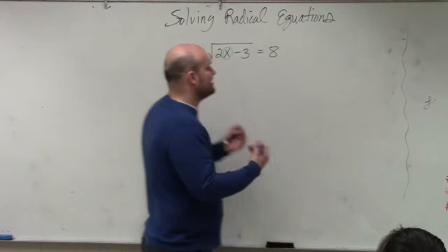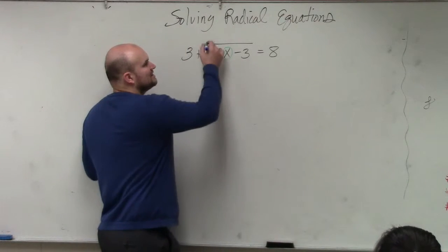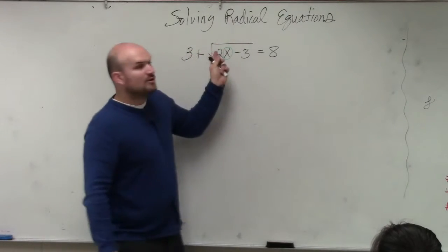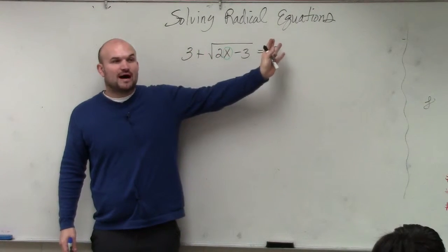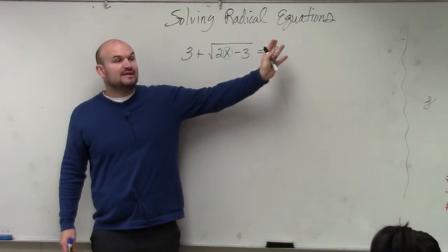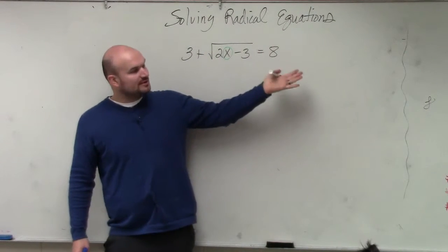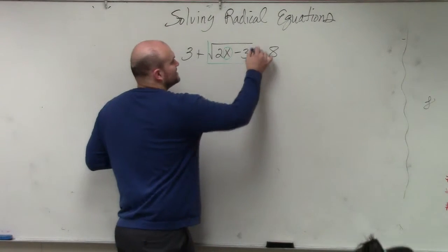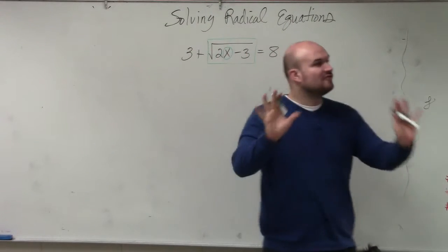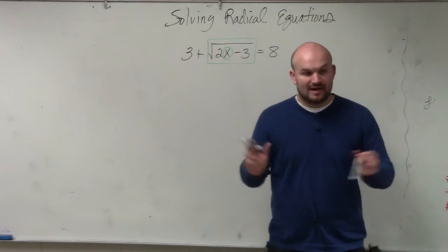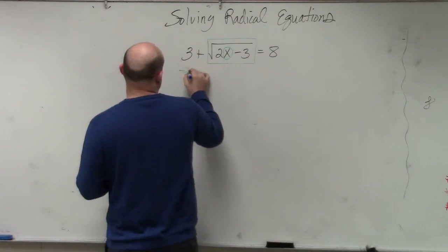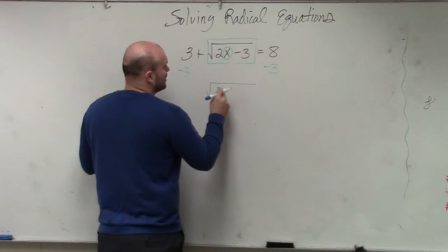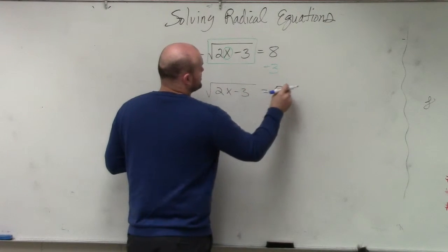To use inverse operations, the best thing I recommend is to follow the reverse order of operations. Remember, a radical is the same thing as a rational power. The main important thing we want to do first is isolate the radical. So to do that, I'm going to subtract 3 from both sides. Now I have the square root of 2x minus 3 equals 5.